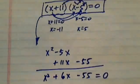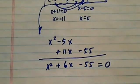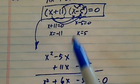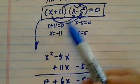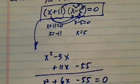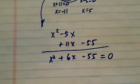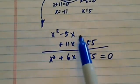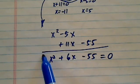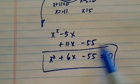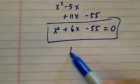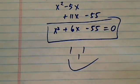I multiplied this out using the FOIL method, then combined like terms, and here's our quadratic equation. Have a confident day.